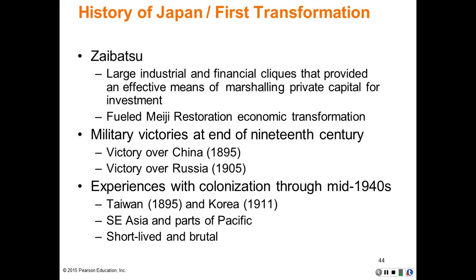The Meiji government borrowed heavily from the West, adopting what it perceived each country did best. A constitutional government with a legislature was established. Feudal daimyo lands were transformed into prefectures, each with a governor chosen from the daimyo, and the imperial capital was transferred from Kyoto to Tokyo. The samurai class was disbanded, and many, because of their high levels of education, were funneled into government bureaucracy or became teachers or military officers.